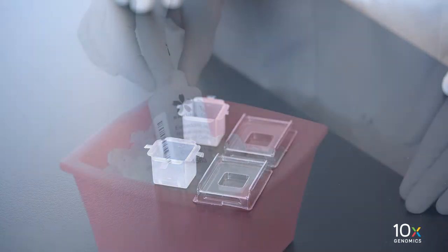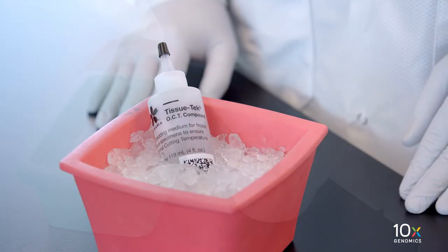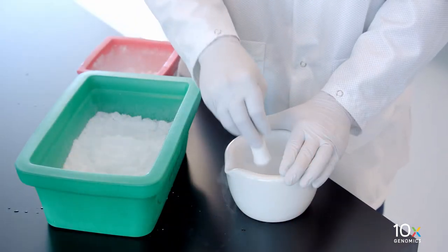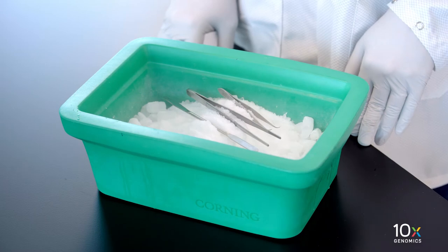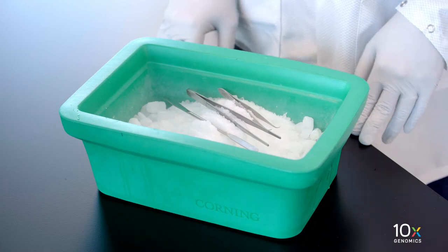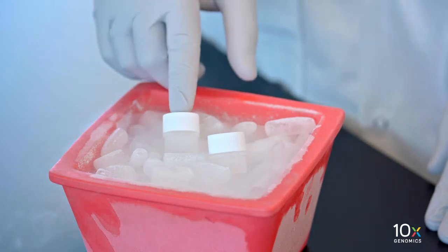We are ready to OCT embed our frozen tissue. We have a cryo mold for embedding, chilled OCT that has been on ice for at least 30 minutes, powdered dry ice that we've made with a mortar and pestle, specimen forceps that have been pre-cooled on dry ice for at least 30 minutes, and a pre-cooled Wheaton Cryoleat cryovial.